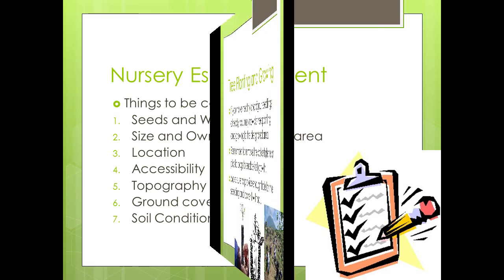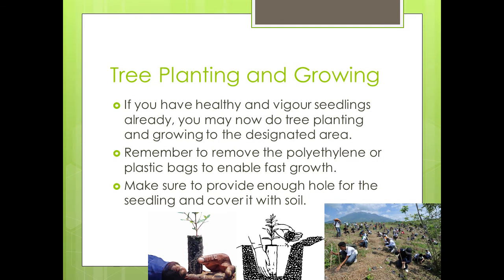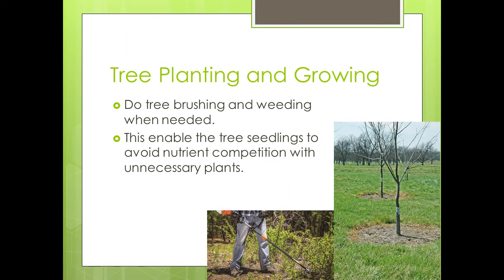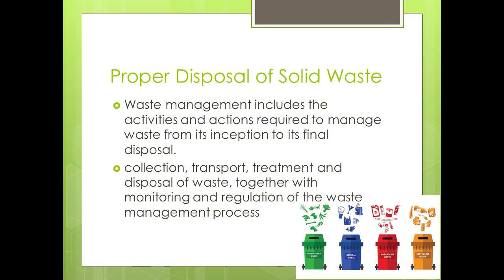Also consider soil condition. For tree planting and growing: if you have healthy and vigorous seedlings, you may now do tree planting in the designated area. Remember to remove the polyethylene or plastic bags to enable fast growth. Make sure to provide enough hole for the seedling and cover it with topsoil. Do tree brushing and weeding when needed, to enable seedlings to avoid nutrient competition with unnecessary plants.